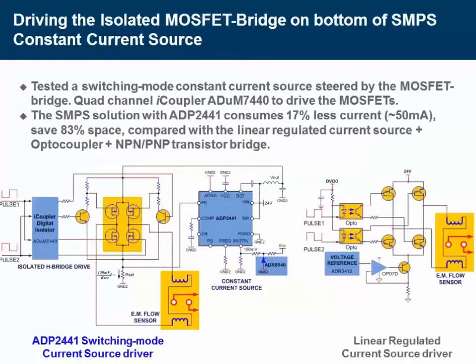Something about the sensor driver circuit. In our demo circuit, we tested a switching mode constant current source steered by a MOSFET H-bridge. We used the ADP7440 quad-channel iCoupler for isolation and driving the gate. The ADP2441 is configured to provide a constant current output. With this technique, we eliminated the losses in the standard current sink and improved the efficiency by about 17 percent and reduced the board area by more than 80 percent.